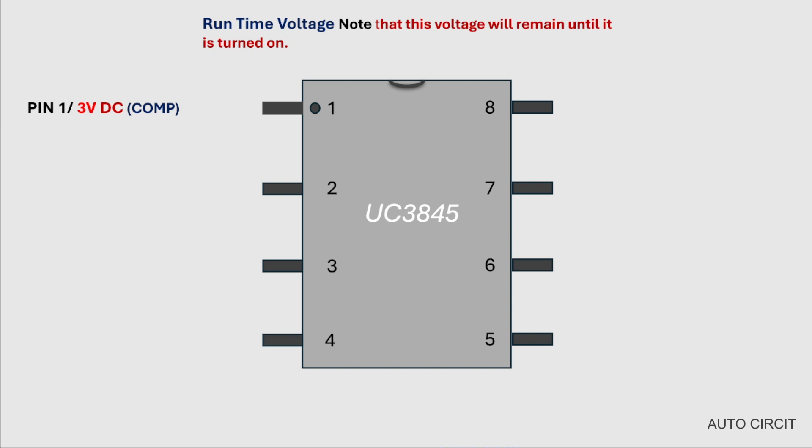Pin number 1 will be 3 volt DC. Pin number 2 is 2.4 volts DC. There is no voltage on pin number 3. Pin number 4: 1.9 volt DC. Pin number 5 ground pin will be 0 volts.